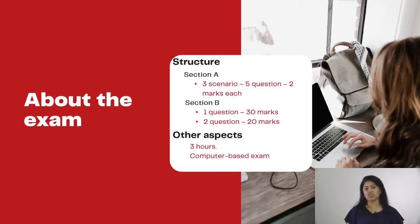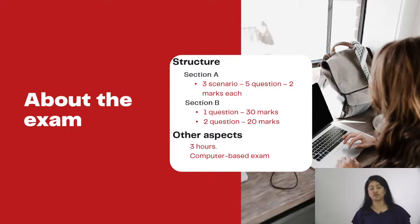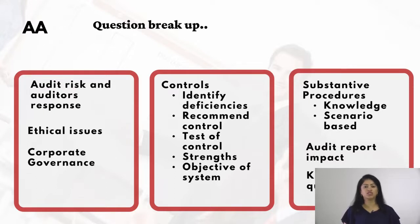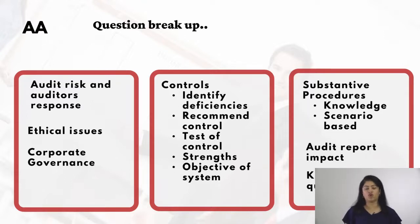Focusing on Section B — anything from the whole syllabus can be tested in Section A, but for Section B these are the probable areas. The first is the audit risk question: remember you need audit risk along with the auditor's response, discussing the relevant accounting standards and the reasons why they have not been followed.